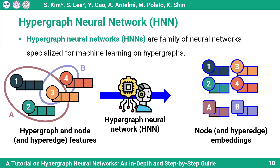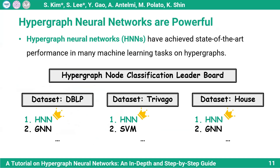Hypergraph neural networks learn to obtain node and hyperedge embeddings, which are used to solve downstream tasks. Notably, in various hypergraph datasets and tests, hypergraph neural networks have achieved state-of-the-art performance, outperforming major competitors like graph neural networks.